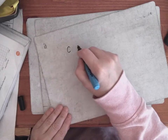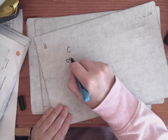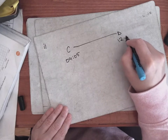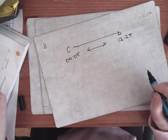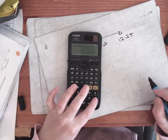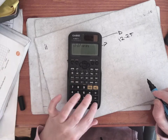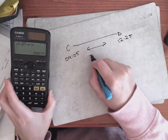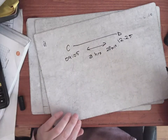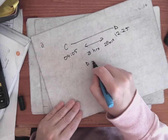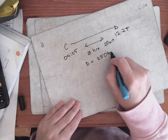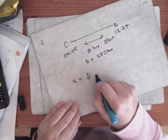Number eleven: a train leaves Cork at 9:05 and arrives in Dublin at 12:25. Subtracting on the calculator — 12 hours 25 minutes take away 9 hours 5 minutes — gives the journey time. The distance is 250 kilometers, and we need to find the speed.